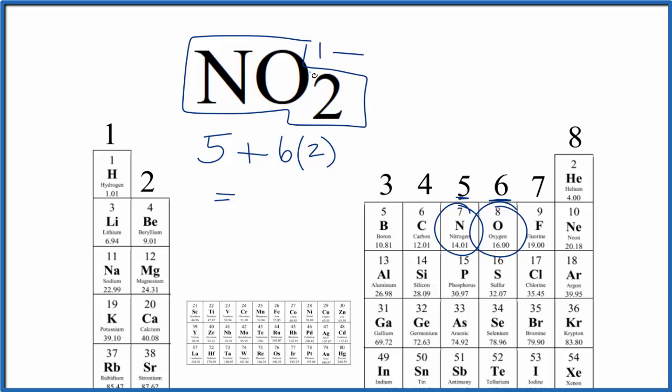And that would give us 1 extra valence electron. Electrons are negative, so if we have that 1 extra, we'll add that here. So instead of 17, we get 18 total valence electrons for NO2-.